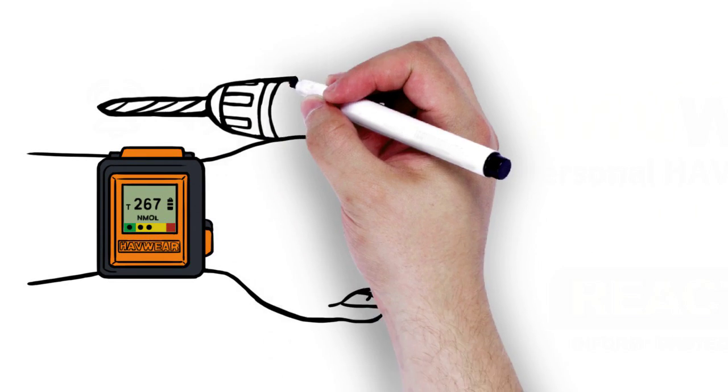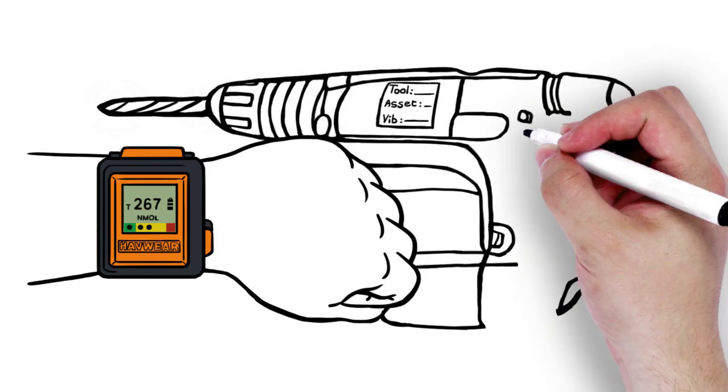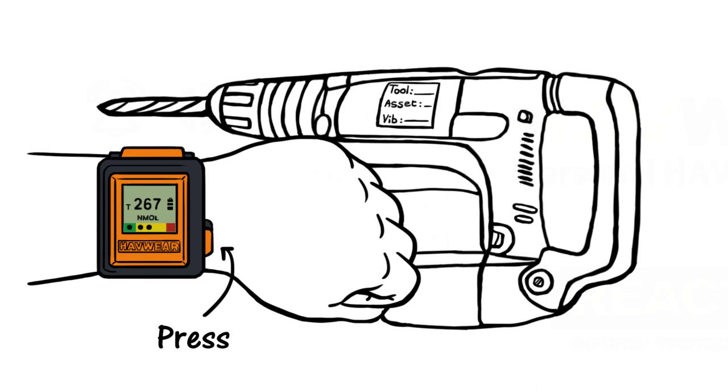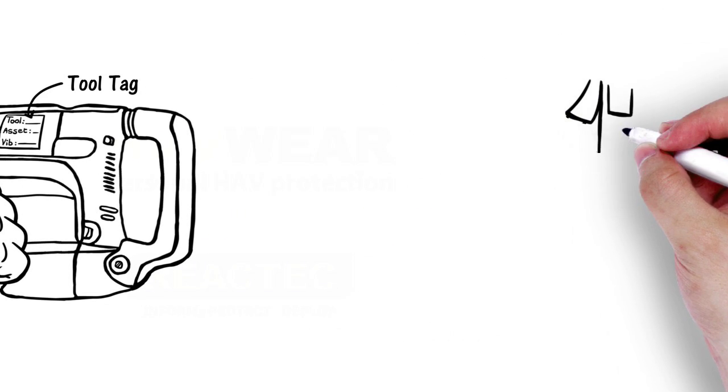To track which tools are exposing operators to vibration, simply press the Havware button and hold it next to a Havware tool tag. The Havware will then log which tool is being used and detect when the tool is being used and for how long. It's that simple.